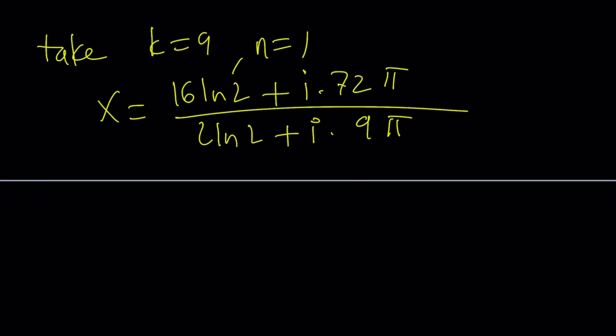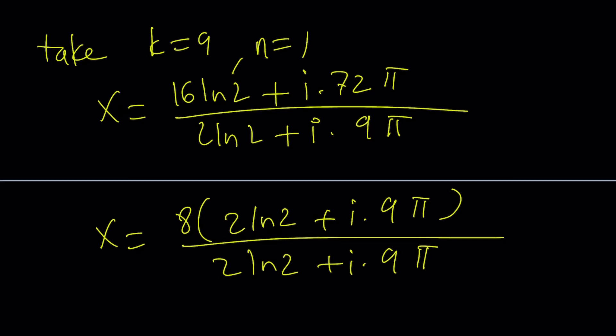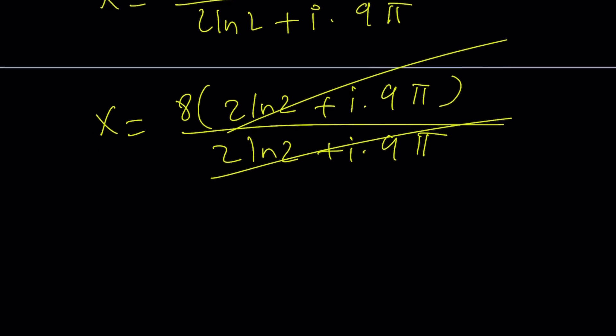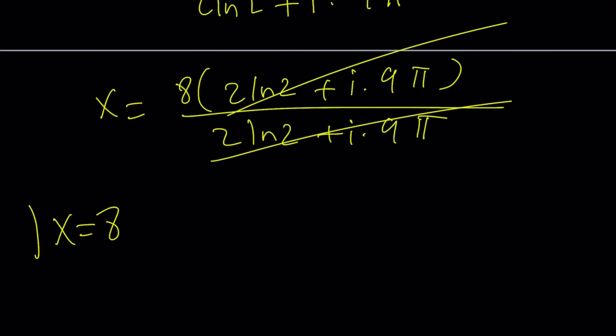Notice that you can factor out an 8. x is going to be 8 times (2 ln 2 + ...). You could take out larger numbers, but there's a reason why we take that out. Things are going to cancel out. And we're going to end up with x equals 8 as a particular value.